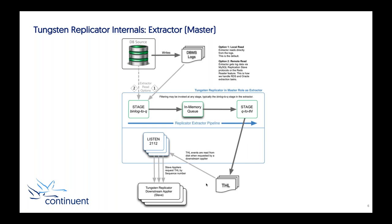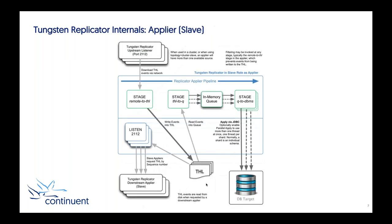We also add other information that is useful when applying to non-JDBC targets — things like column names and primary key information. Once it's in that THL format on a single replicator, we can point that THL at any other replicator and apply it down to a different target. In the Applier stage, we extract the THL from the remote replicator, it goes through a very similar pipeline, and ultimately gets applied down to the target database.